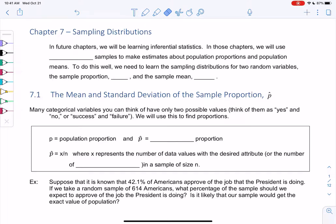Chapter 7, Sampling Distributions. In future chapters, we'll be learning inferential statistics. Way back in chapter 1, we learned that inferential statistics is making conclusions about a population from a sample.